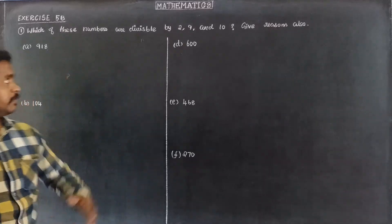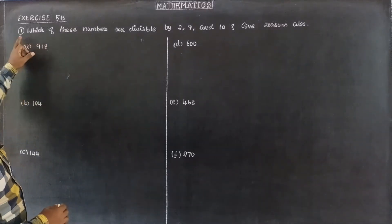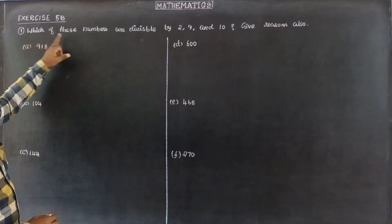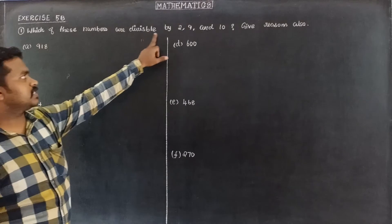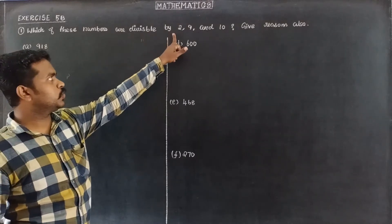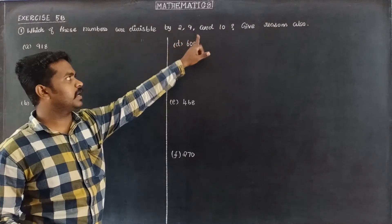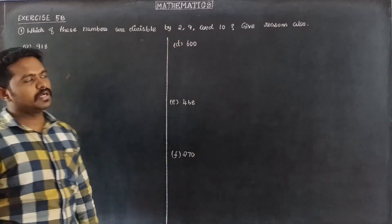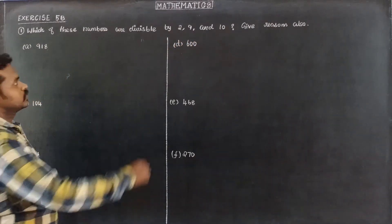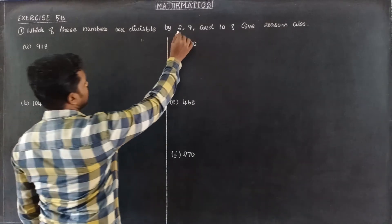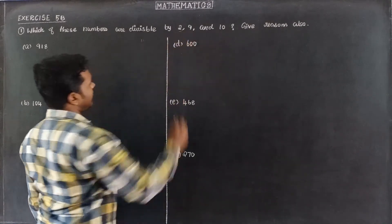Next, Exercise 5b, level question number 1. Which of these numbers are divisible by 2, 9, and 10? Give reason for your answer.